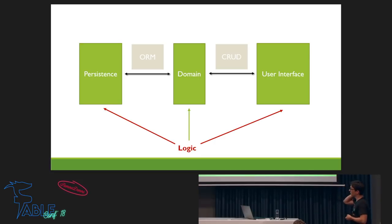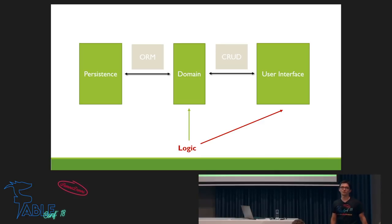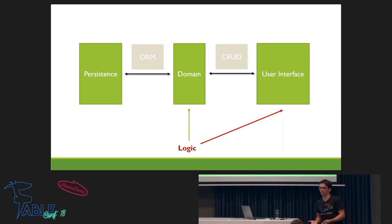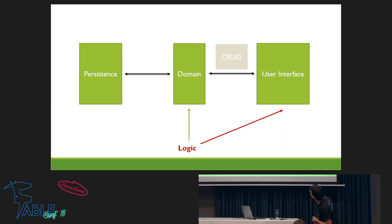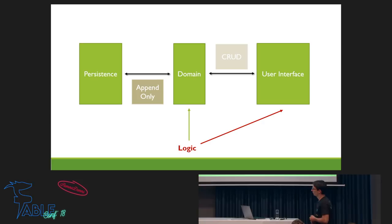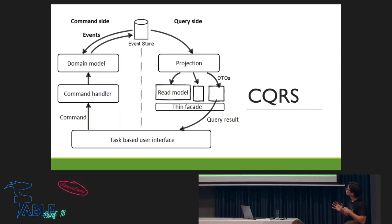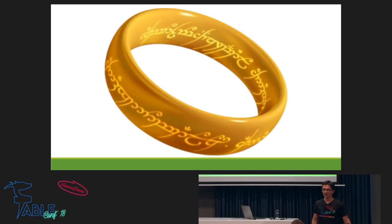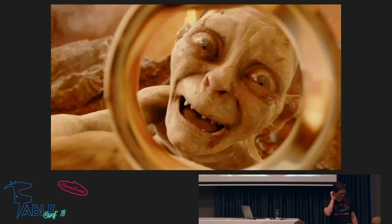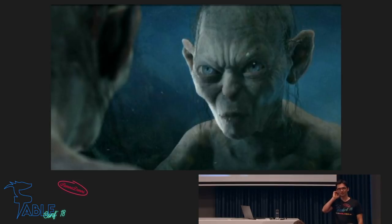If we go back to the architecture diagram, hopefully we've gotten rid of the logic in the persistence layer — the persistence is just a list of events. There's no possibility for logic there, no database triggers anymore. The really nice thing is that we don't need an ORM anymore — it's an append-only store and that's it. So if we look at this, it resembles a ring — a ring of power.